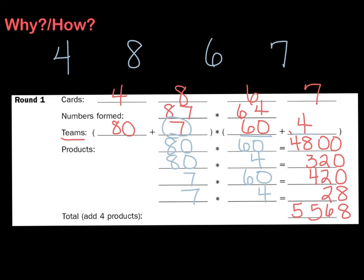That looks like I got a total of 5,568. So then what will happen is my partner will also choose four digits from the deck, make two two-digit numbers, and they will go through this same process. We will see who had the largest product after we both have our turn, and that person will be the winner of that round.